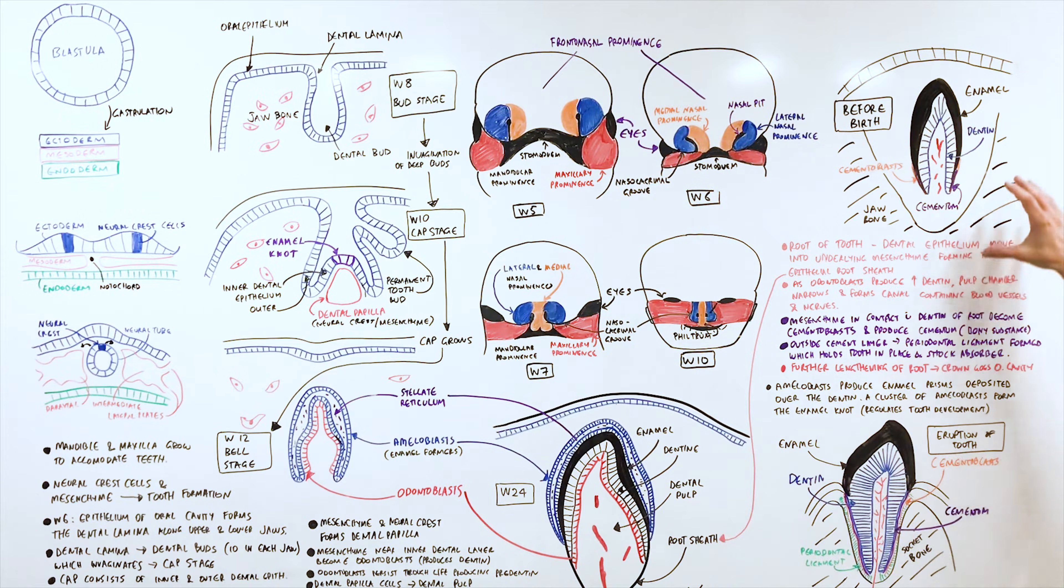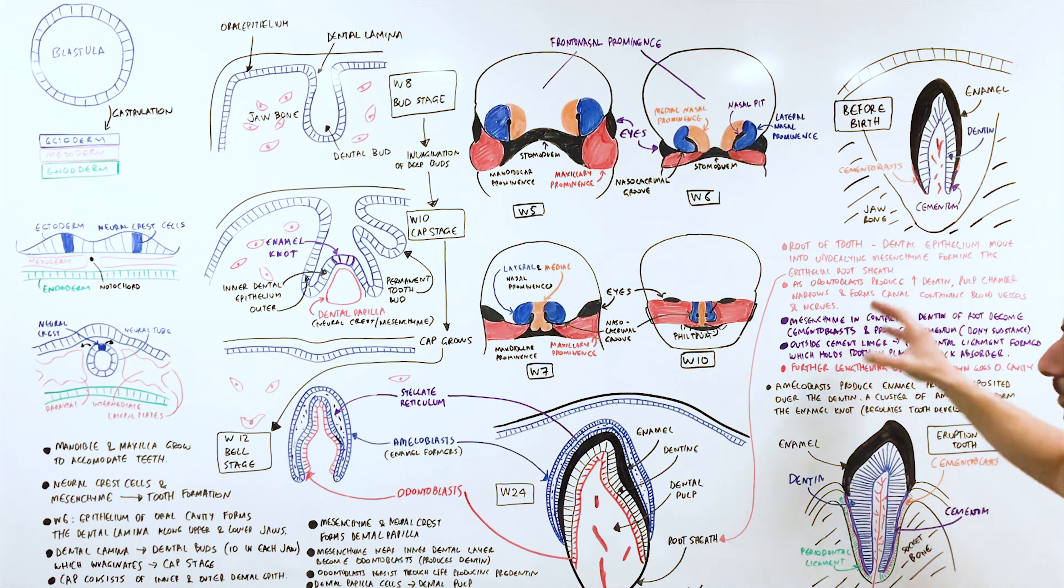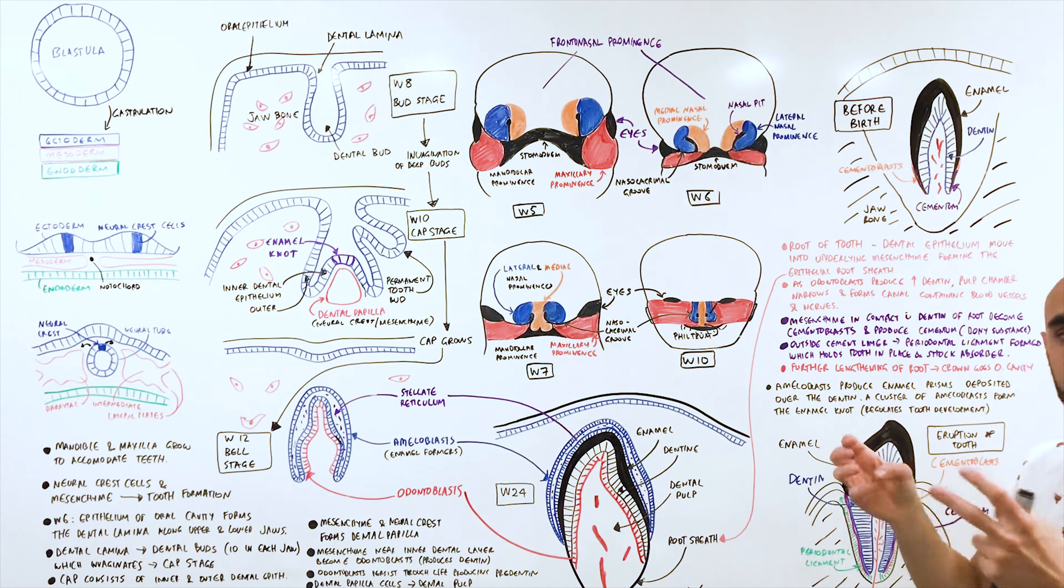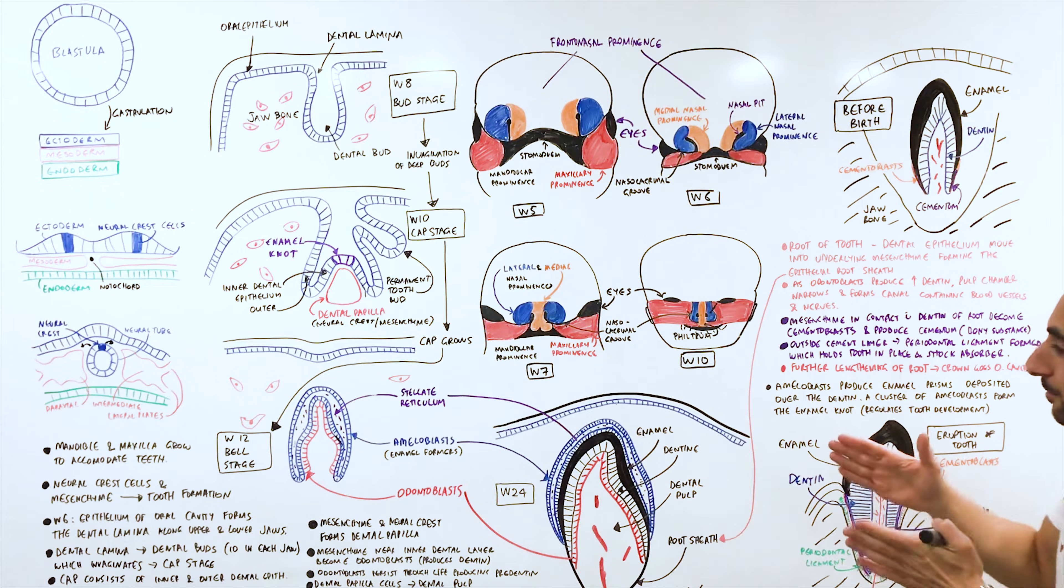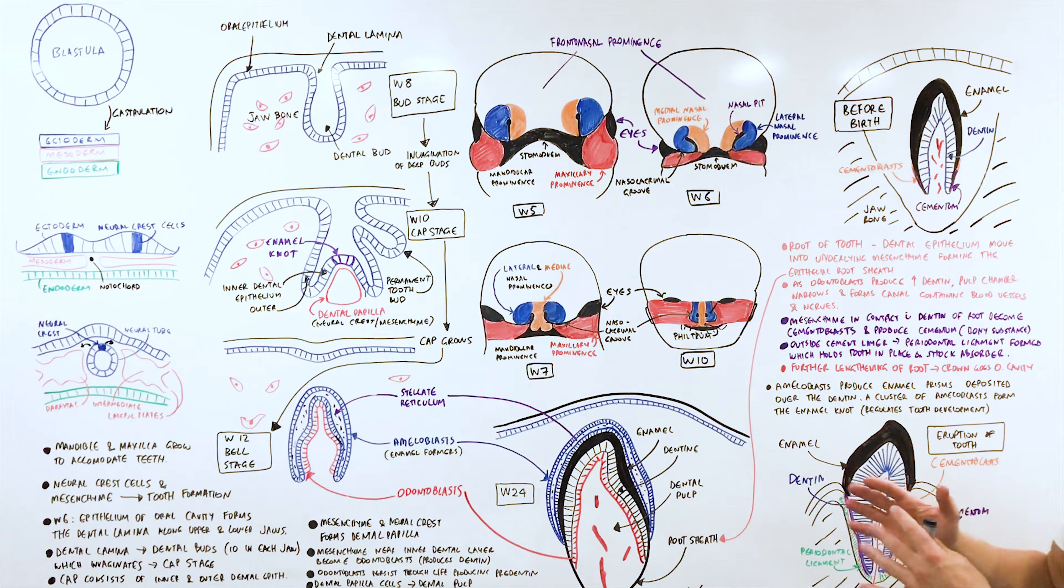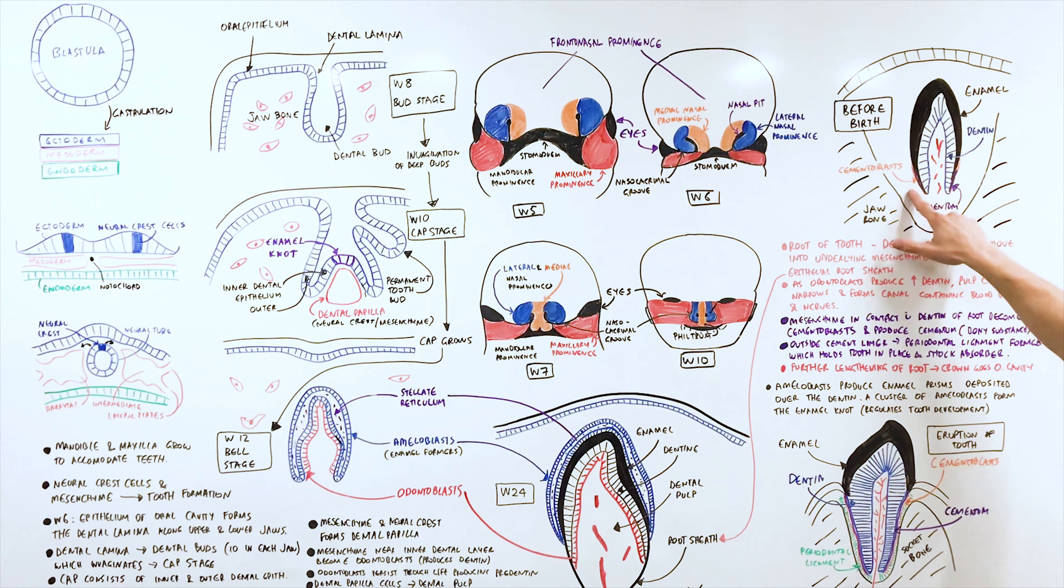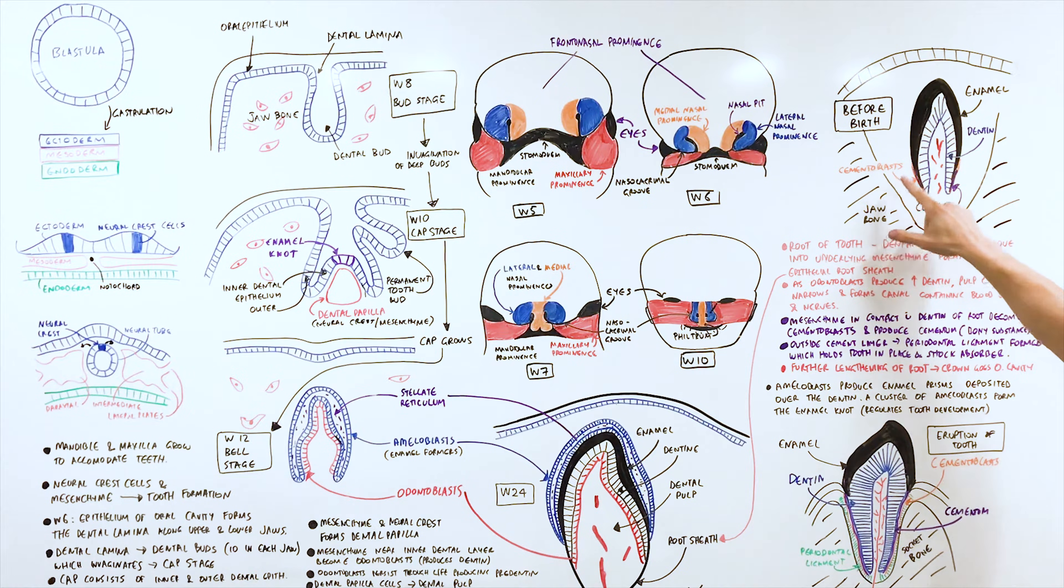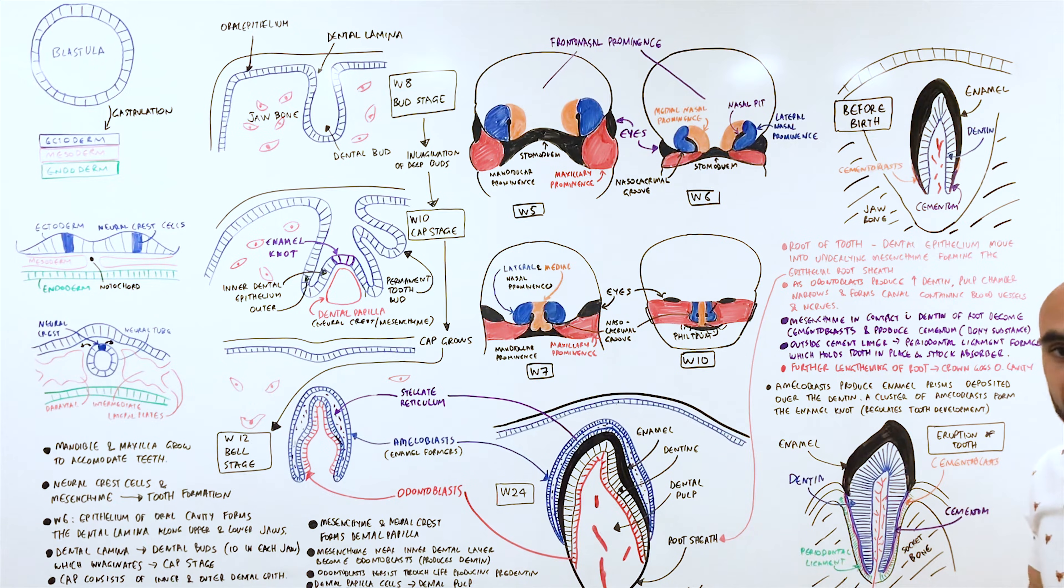Let's have a look now at what it looks like before birth—it still hasn't been erupted. We can see our dentin and enamel which is the result of the odontoblasts and ameloblasts. Both the ameloblasts and odontoblasts as their products thicken will gradually regress and become much thinner and assimilated into the surrounding tissues. However we have now some cementoblasts and cementum. The mesenchyme in contact with the dentin, so the surrounding tissue, becomes cementoblasts and they produce cementum. This is a very bony substance which essentially does what its name says—it keeps the tooth in there, cemented.